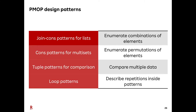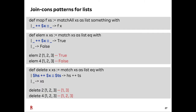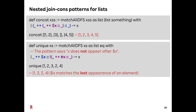The first design pattern is join-cons patterns for lists. Many list functions can be defined using join-cons patterns — here we define map, elem, and delete. Elem is a function that determines whether the second argument list contains the first argument element. By nesting join-cons patterns, we can describe more non-trivial patterns. The concat function can be defined using nested join-cons patterns. The unique function can be defined by combining a not-pattern with a nested join-cons pattern — this pattern describes that x does not appear again after x, so x matches only the last appearance of the element.